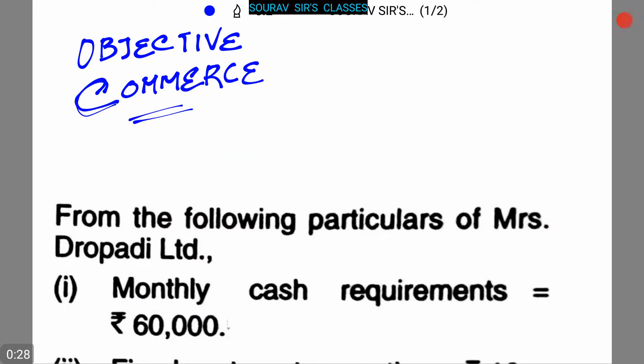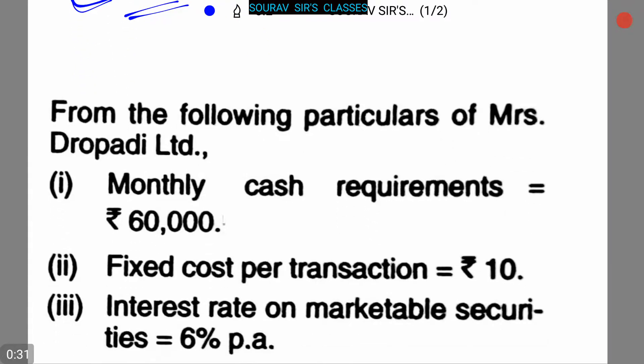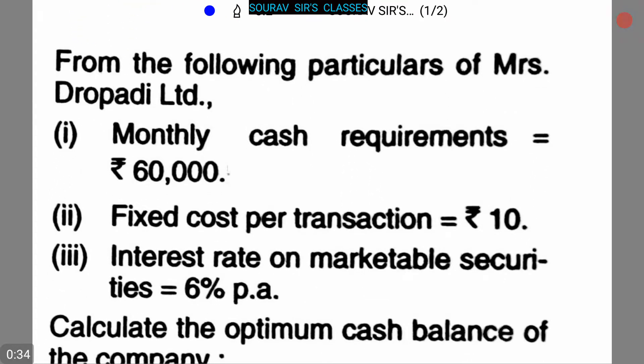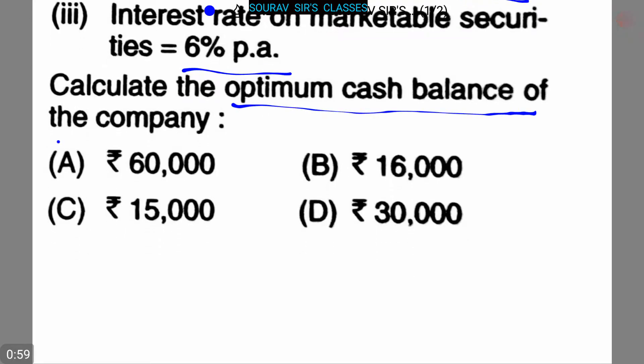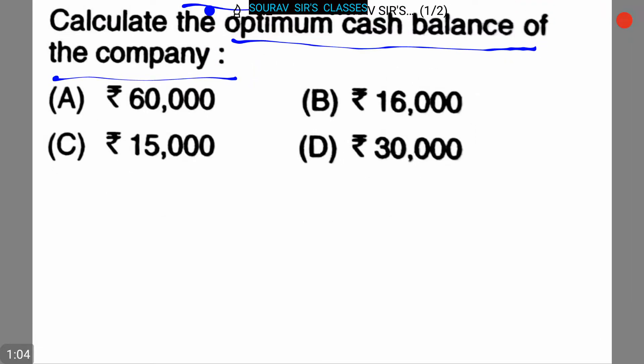Today our topic is Objective Commerce. Here is our first question from the following particulars of Mrs. Draupadi Limited. Monthly cash requirement is 60,000, fixed cost per transaction is rupees 10, interest rate on marketable securities is 6% per annum. Calculate the optimum cash balance of the company.